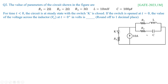By looking into the circuit first, you replace the resistors, inductors, and capacitor labels with the given values, then look into the circuit. For time t less than 0, the circuit is at steady state with switch K closed. If the switch is open at t equal to 0, the value of the voltage across the inductor at t equal to 0 plus in volts is required, rounded to one decimal place.